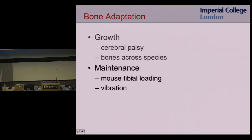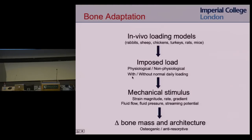The next project is bone maintenance — looking at bone adaptation. A typical bone adaptation model takes an in vivo loading model where you load bones of live animals. You impose a load — either physiological or non-physiological — which creates some mechanical stimulus. This could be strain magnitude, rate, or gradient, fluid flow, or fluid pressure — lots of different mechanical stimuli have been proposed in the literature. This mechanical stimulus causes some change in bone mass and architecture.